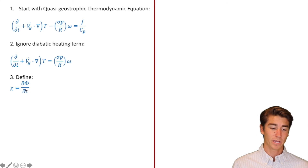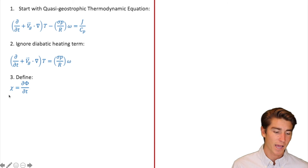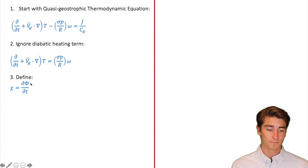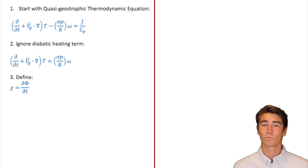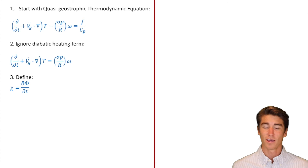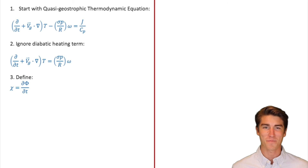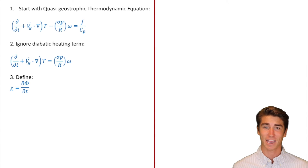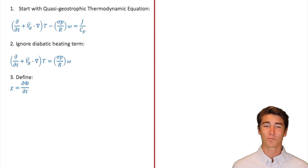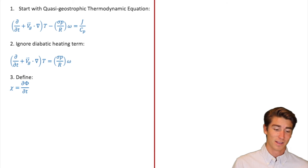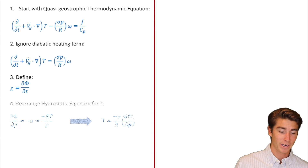In step three we're going to define chi equals d-phi/dt. This is something that we do in both this equation and when deriving the omega equation. If you've seen the derivation video for the omega equation, all these original steps are going to seem the exact same because they are, so watching this again is a great way to reinforce your learning. So we're going to define chi equals d-phi/dt.